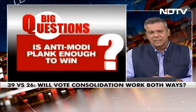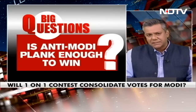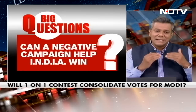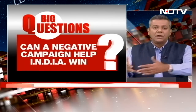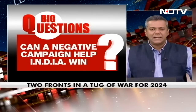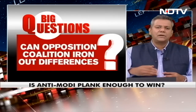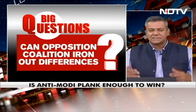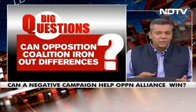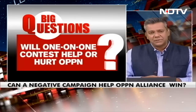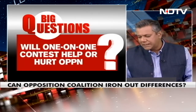What are some of the other key questions? Is the anti-Modi plank enough to win? Can a negative campaign help INDIA win? The Prime Minister has said this is a negative campaign — we've seen negative campaigns in the past that clearly didn't help the Congress. Can opposition coalition members iron out their differences? There are so many: the leadership issue, the seat-sharing issue. When are those going to be addressed? And will a one-on-one contest help or hurt the opposition?